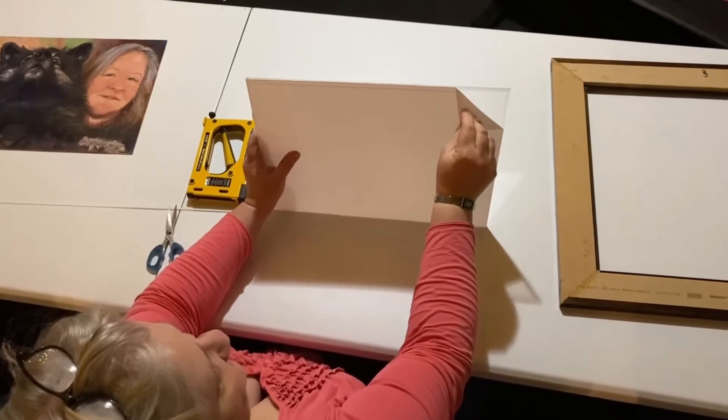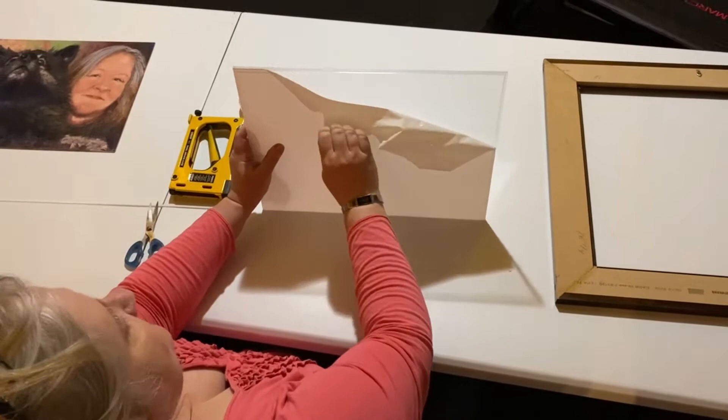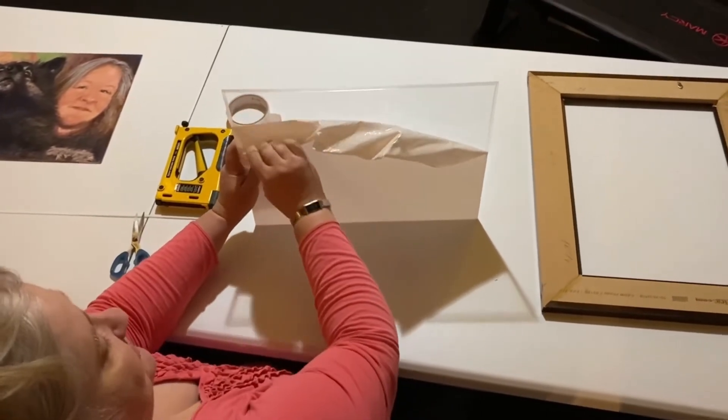Next, we're going to peel the adhesive back from the other side of the acrylic. Acrylic always comes with two sides.